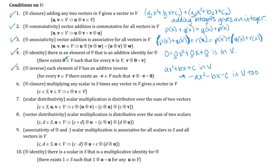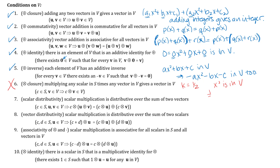Scalar multiplication closure — multiplying any scalar in S times any vector in V gives a vector in V. The key issue is that our scalars can be all real numbers, not just integers. This one does NOT hold. For example, take the scalar ½ and the polynomial x² (which is in V with coefficients 1, 0, 0 — all integers). Then ½ · x² = ½x², and that is not in V because ½ is not an integer. So scalar multiplication closure fails.